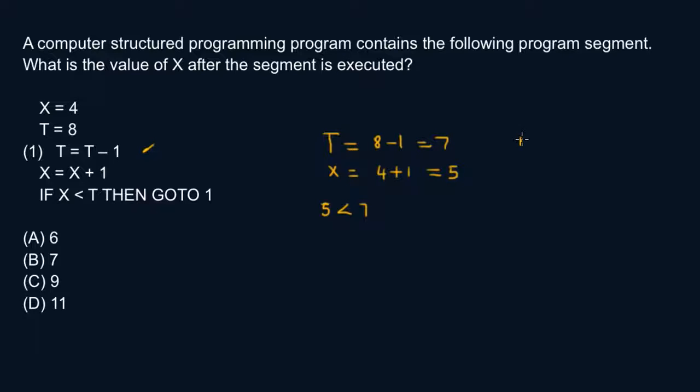So t is equal to t minus 1. Now t is no longer 8. t is now equal to 7. So we always use the newest value. So 7 minus 1 is, that's 6. x is now equal to x plus 1. So that's 5 plus 1. This is equal to 6.